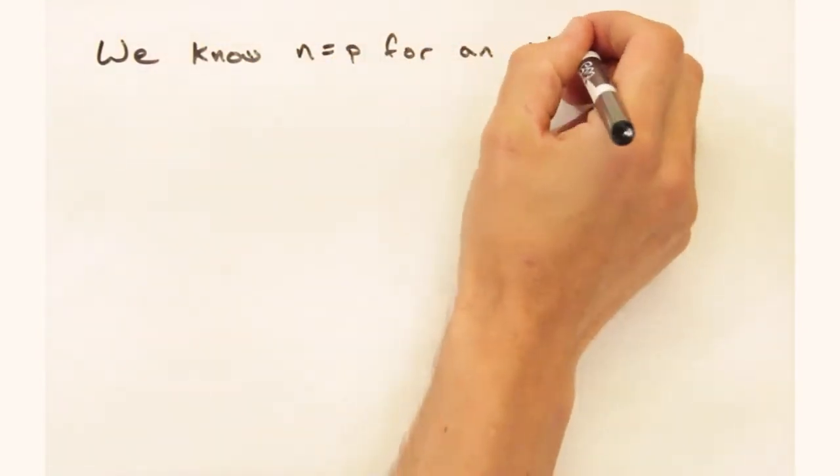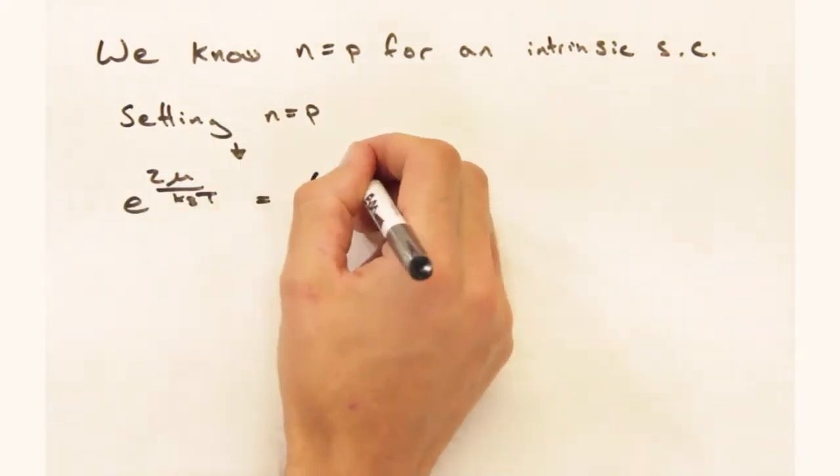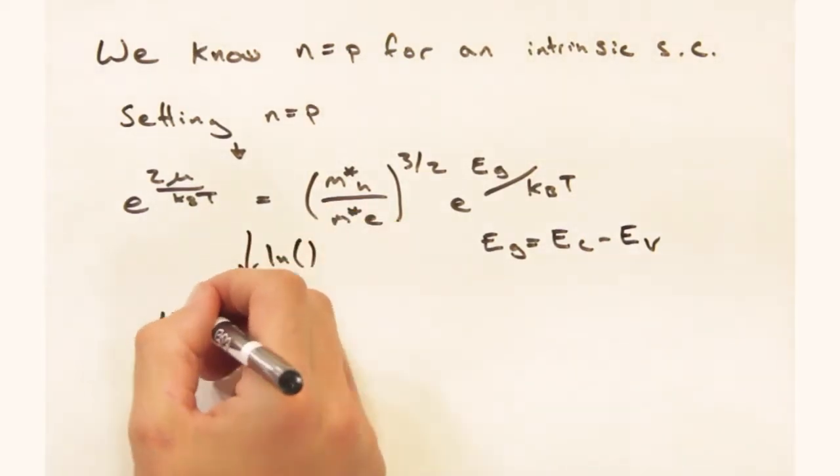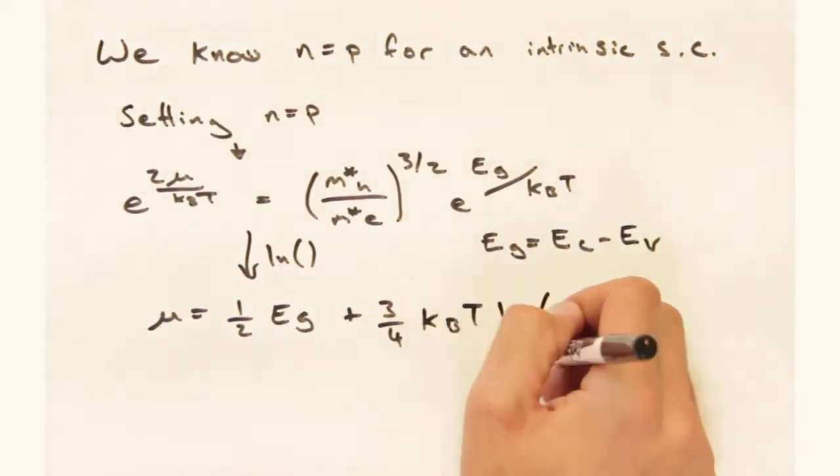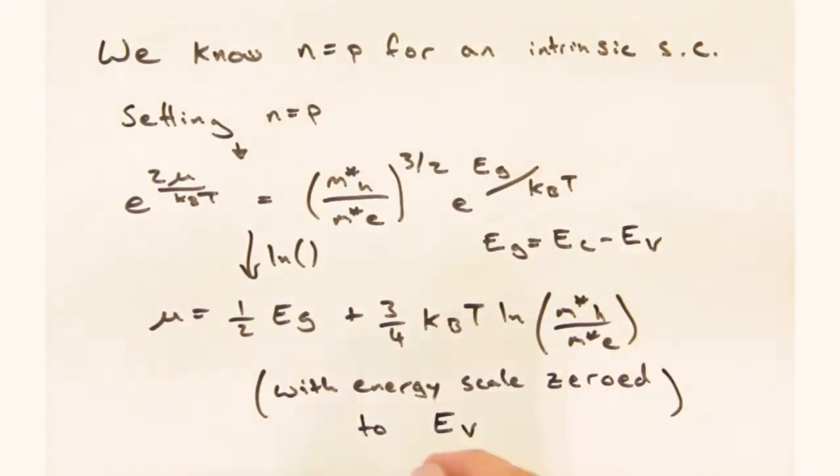Hmm. Since an intrinsic semiconductor has the same density of electrons and holes, we should be able to set these two expressions equal to each other. Okay, cool. Let's give that a shot. Taking the natural log of both sides, we end up with an expression for the chemical potential as a function of the band gap, temperature, and the effective mass.